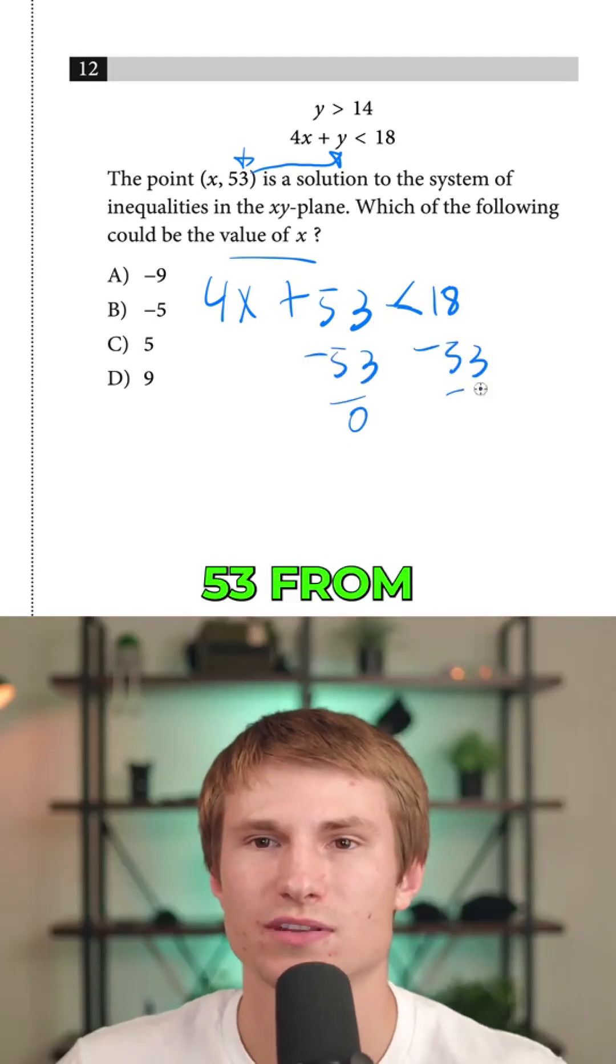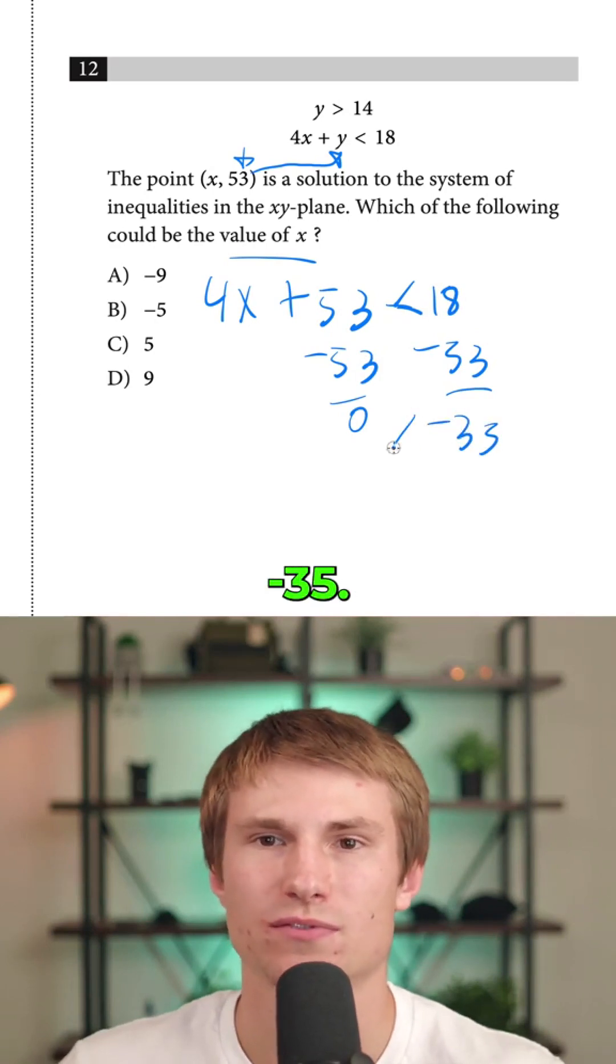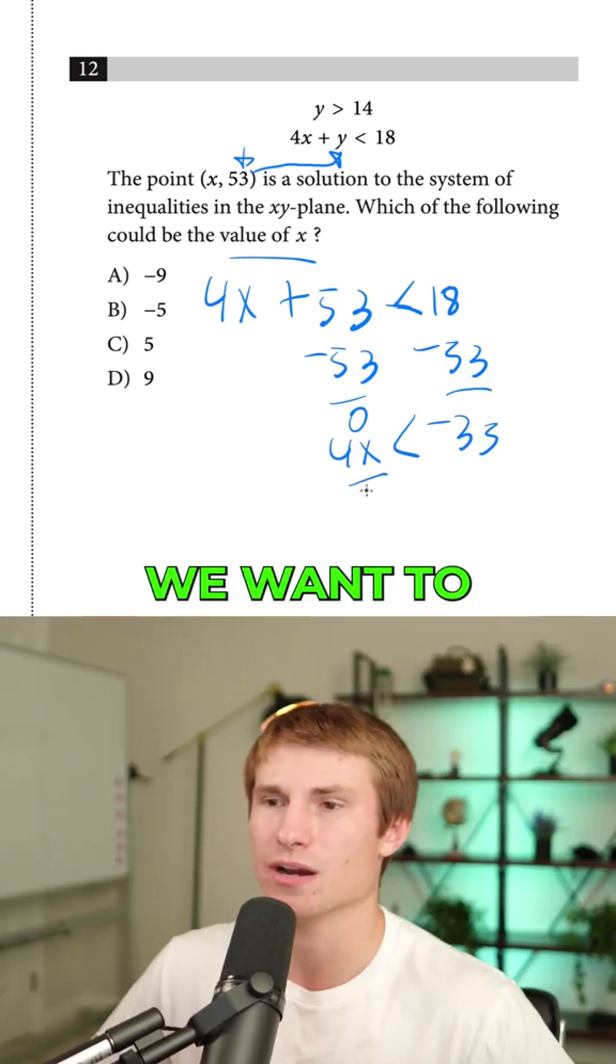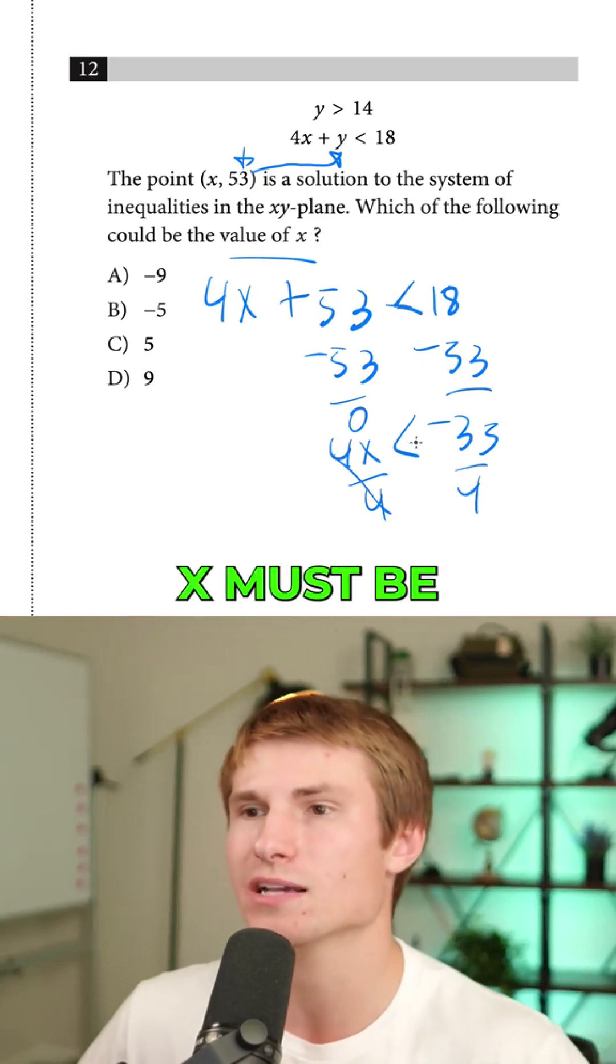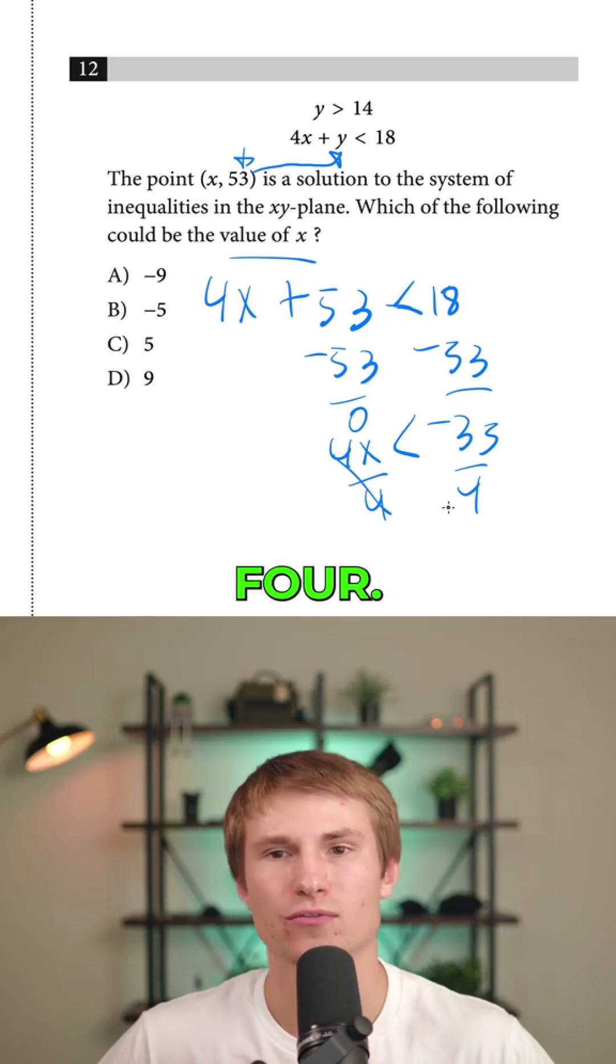So we'll subtract 53 from each side. That'll end up leaving us with negative 35 must be greater than 4x. From there, we want to isolate x, as I said, so we divide both sides by 4.